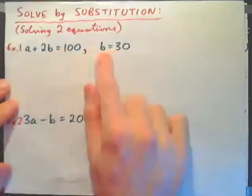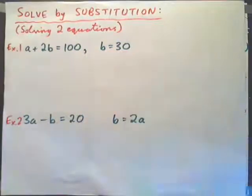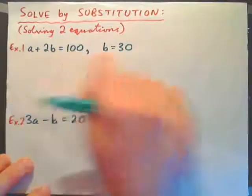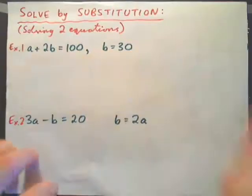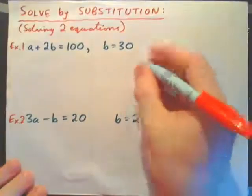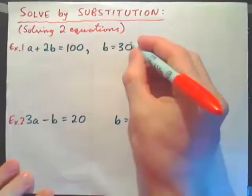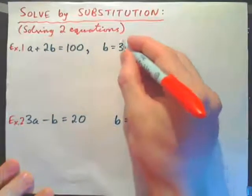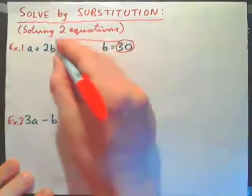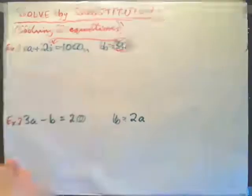Example 1: a plus 2b equals 100, b equals 30. We can imagine these equations as saying an apple plus 2 bananas costs 100 cents, or $1, and a banana costs 30 cents. The only new skill we need is substitution — it is where you take a value and plug it in for a variable.